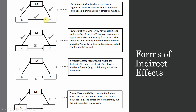In partial mediation, some of the effect passes directly while some passes indirectly. Complementary mediation is where the indirect effect — passing through M — and the direct effect both have similar influence, for example, both having a positive influence. Competitive mediation is where the indirect effect and the direct effect have dissimilar influence — for example, the direct effect is negative and the indirect effect is positive, so they have different signs.